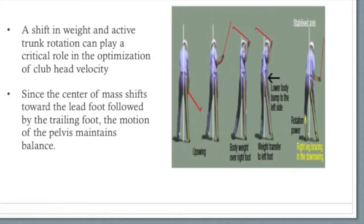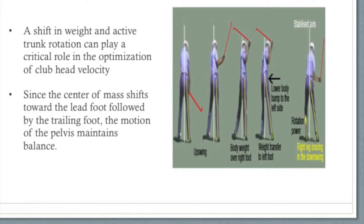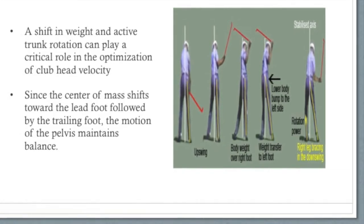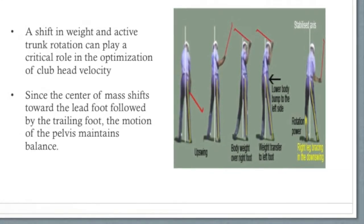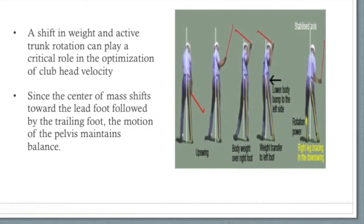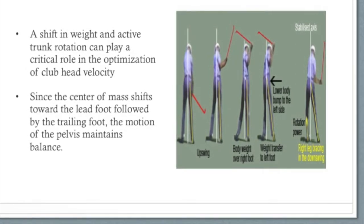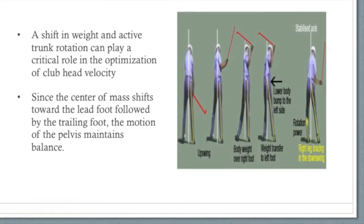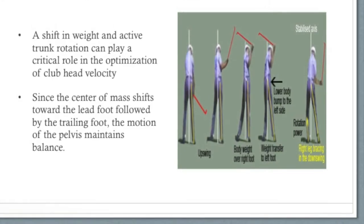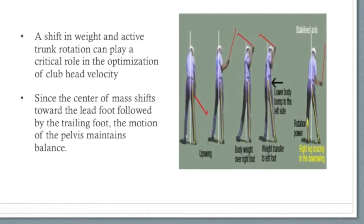To continue our discussion about weight distribution, let's talk about the transfer of weight. A shift in weight and active trunk rotation can play a very critical role in the optimization of club head velocity. The center of mass in a golfer actually moves in a vertical direction during the swing phases. Since the center of mass shifts toward the lead foot and then by the trailing foot, the motion of the pelvis maintains balance.